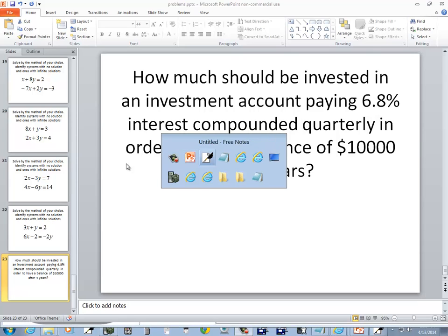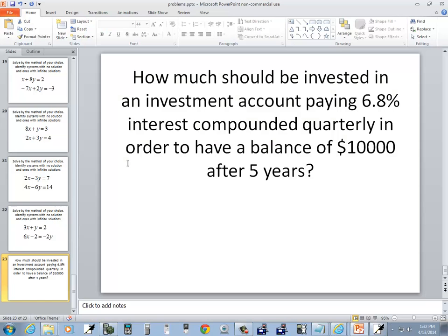Let's take a look at this problem. How much should be invested in an investment account paying 6.8% interest compounded quarterly in order to have a balance of $10,000 after 5 years?